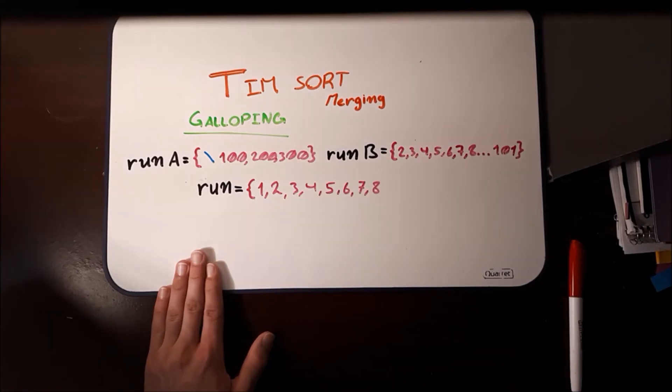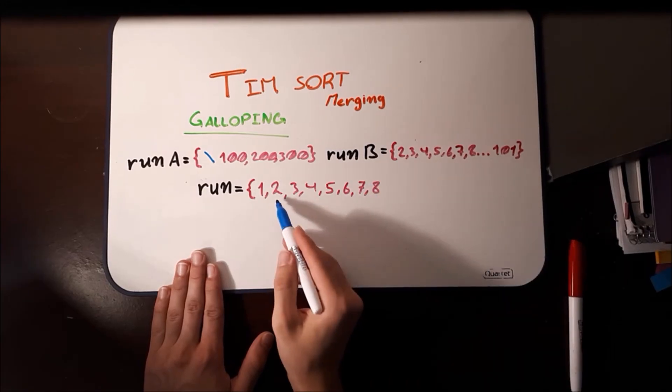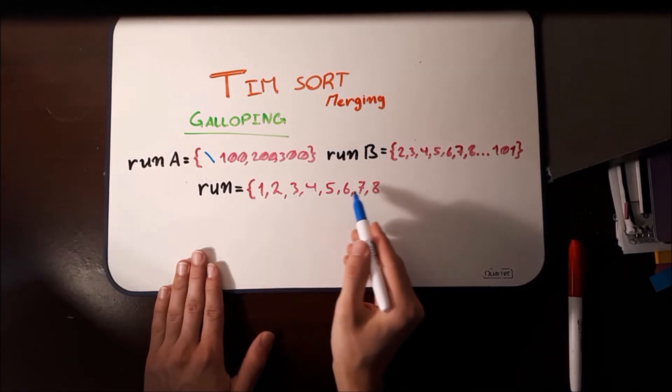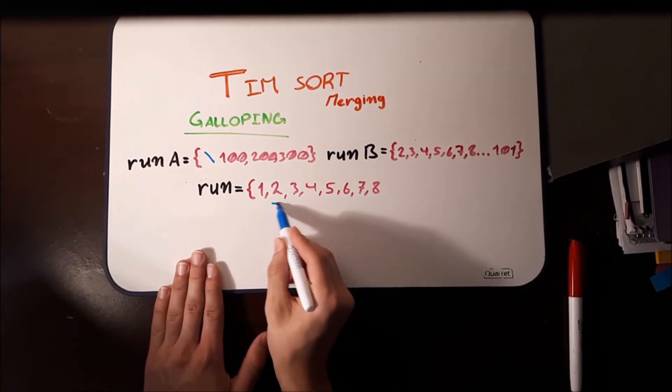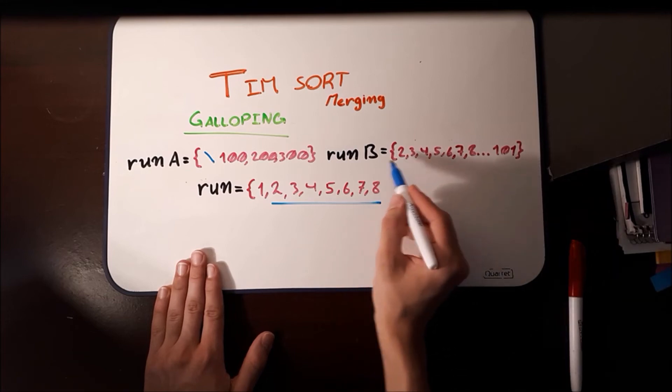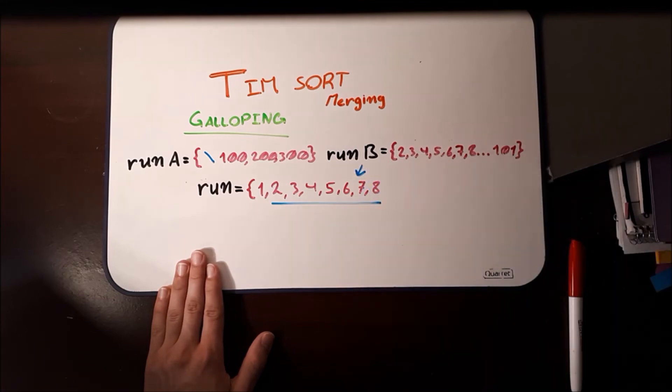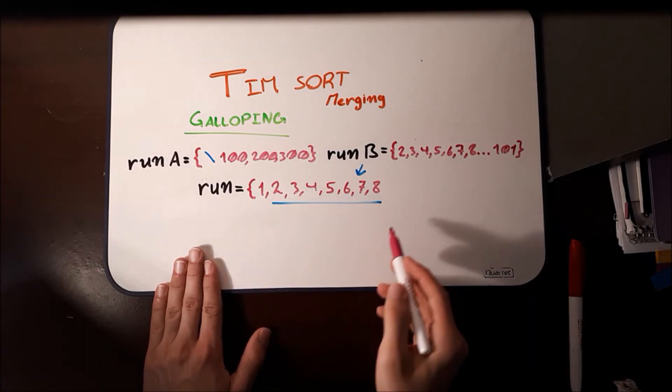Then the algorithm realizes that all of these, 2, 3, 4, 5, 6, 7, 8, that's 7 elements that all came from run B. Now 7 is a magic number in Java. What happens next is because all of these 7 elements came from run B,